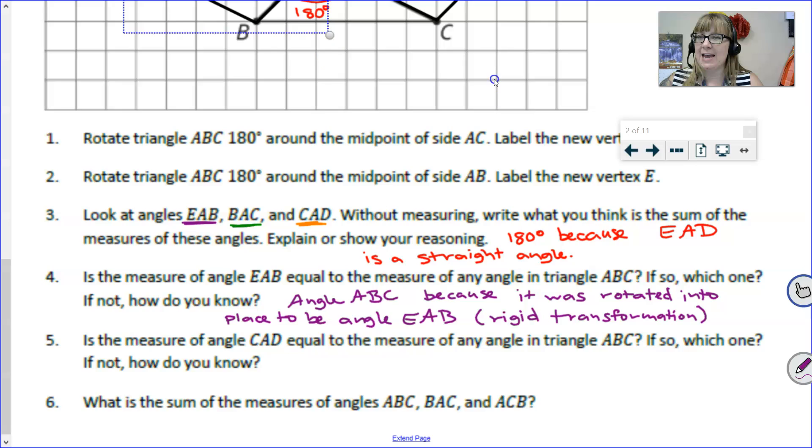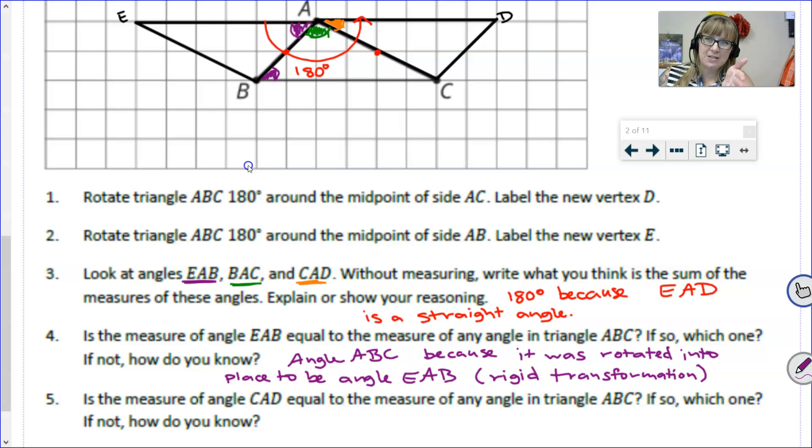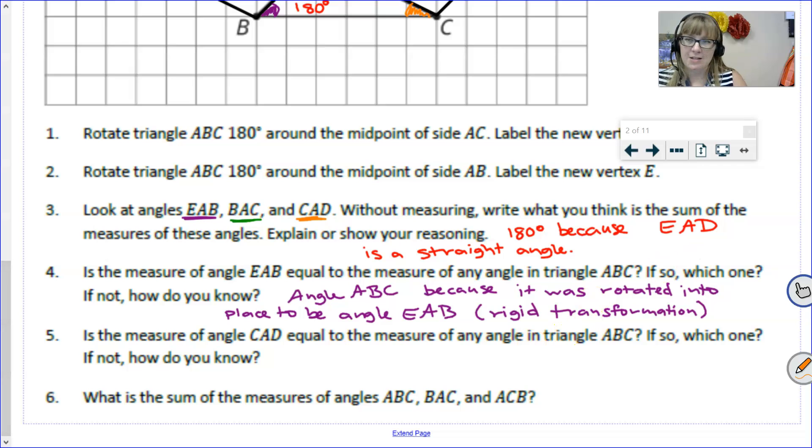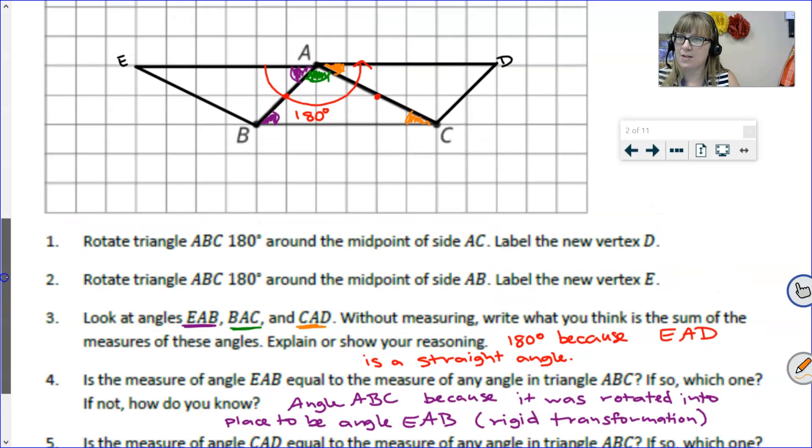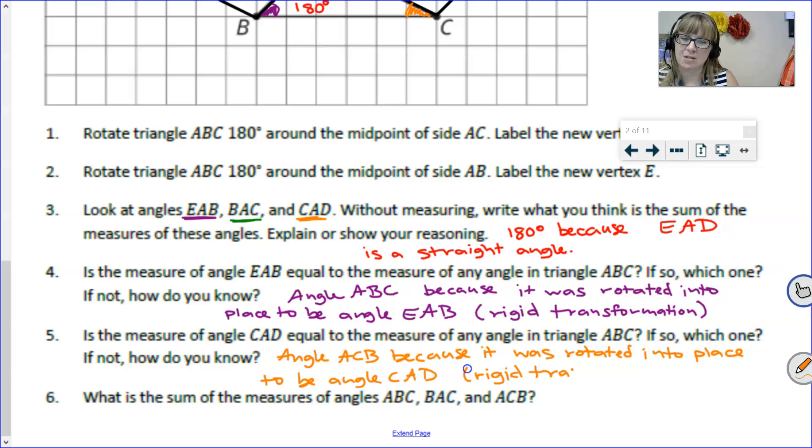Similar question, but now we're focusing on CAD. Again, CAD was the one that was orange. What about CAD? Does that have something in the original triangle? Sorry, I skipped ahead. Let me actually color that one in purple now that we know it. I hope you're coming to the same conclusion that we can rotate it back into place from where it originally was, and we are seeing that it would of course be angle ACB. I'm going to go ahead and color that in now so I don't forget. So again, that is—I forgot the letters—ACB, because it was rotated into place to be angle CAD.